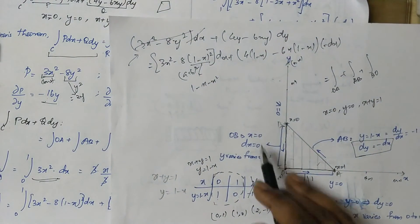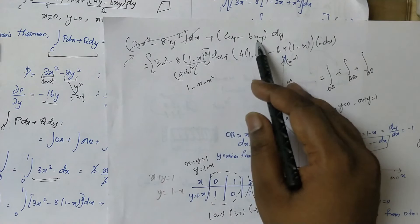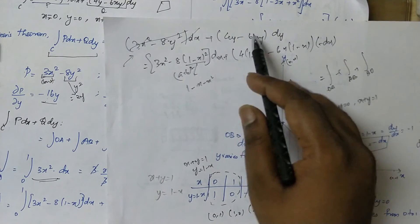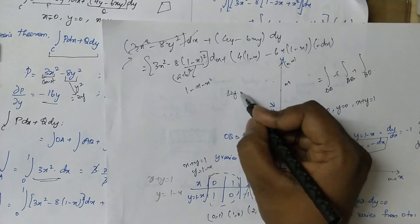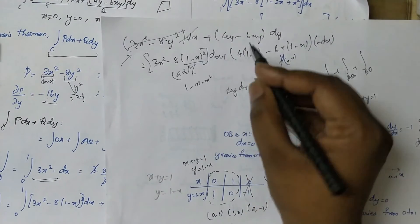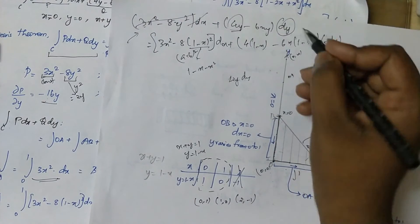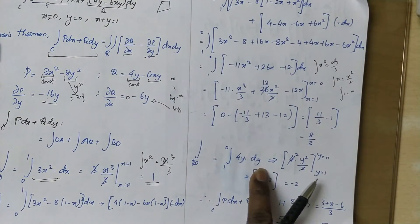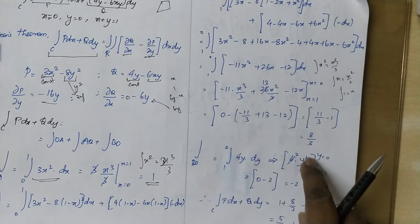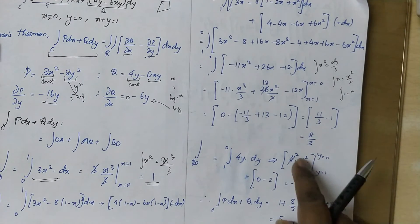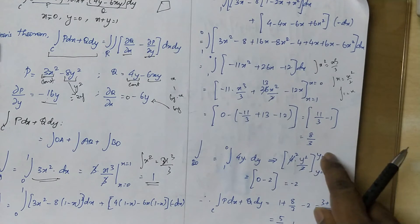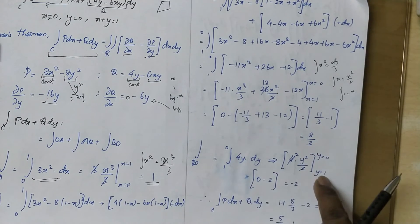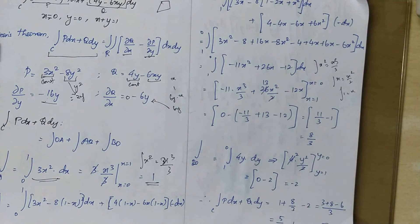x equal to 0. Now we put y and x equal to 0. Then we get 4y dy. So y integrates to y² by 2; the 2 and 4 cancel, giving 2y². Upper limit is 0 and lower limit is minus 2, so this gives minus 2.